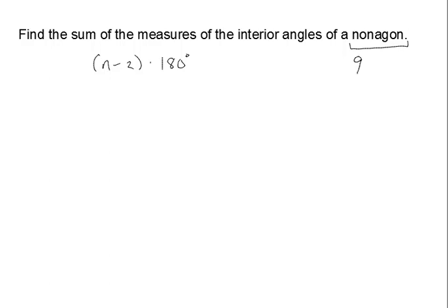A nonagon has nine sides. And so, this problem, once you know that it has nine sides, and the formula for finding the sum of the interior angles becomes a pretty easy thing to do.